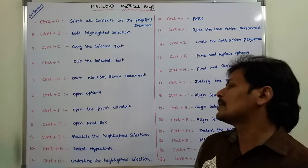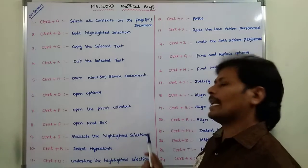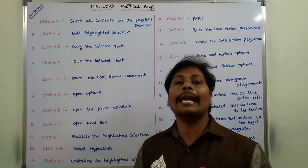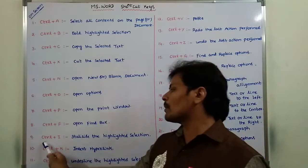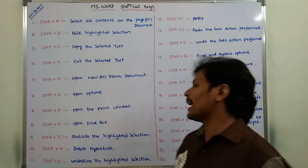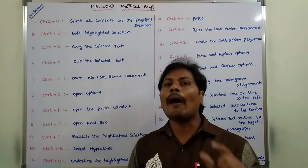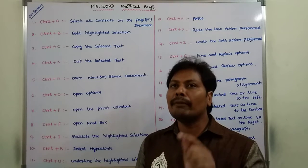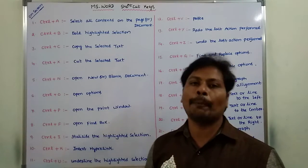Next is Ctrl plus I. This command or key is used to italicize the highlighted selection — whatever text is highlighted or selected will be shown in italic fashion. Use Ctrl plus I for that purpose. Next is Ctrl plus K, which is used to insert a hyperlink. This hyperlink is shown in blue color, and whenever we click that hyperlink, it goes to another page.